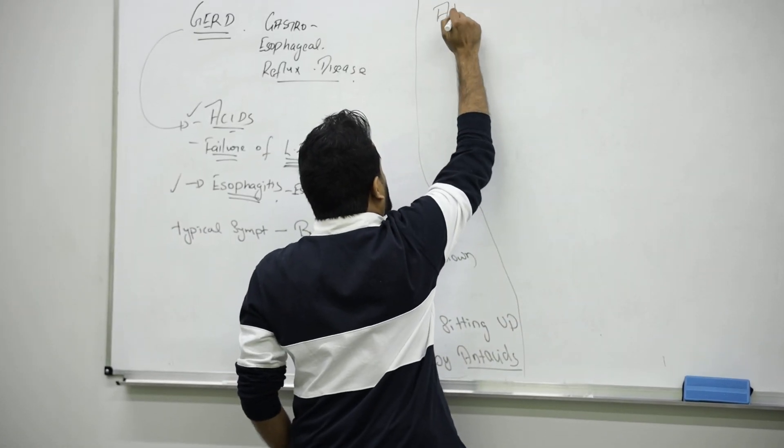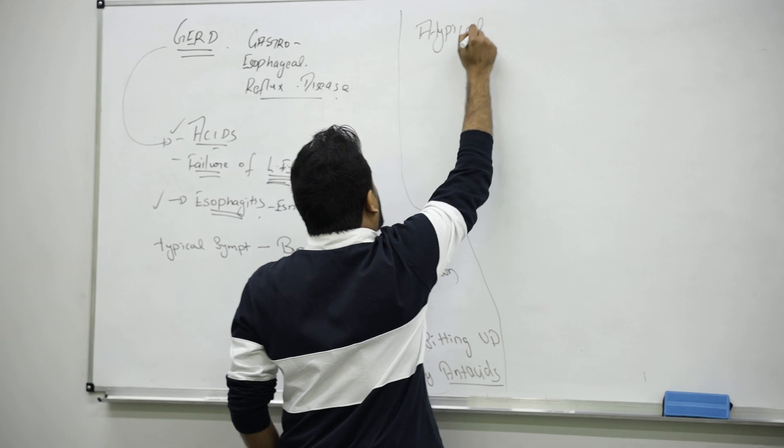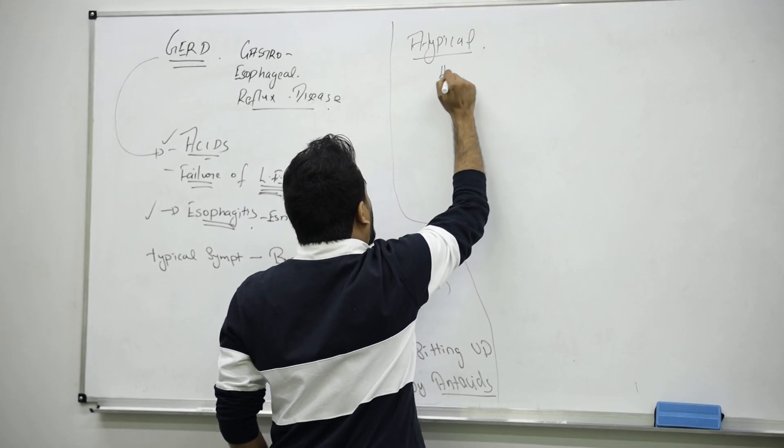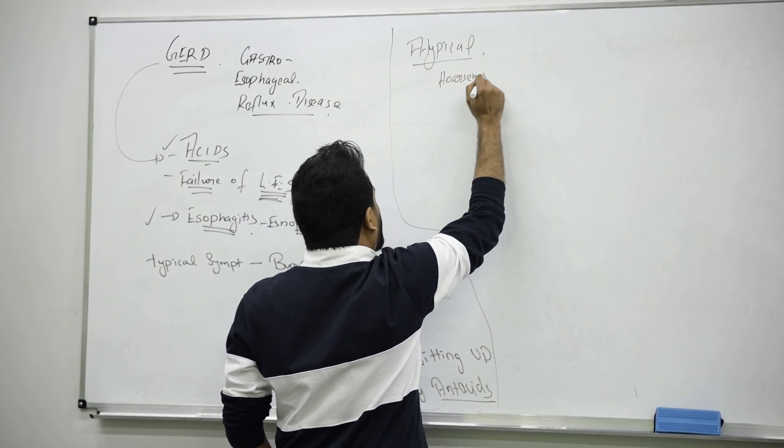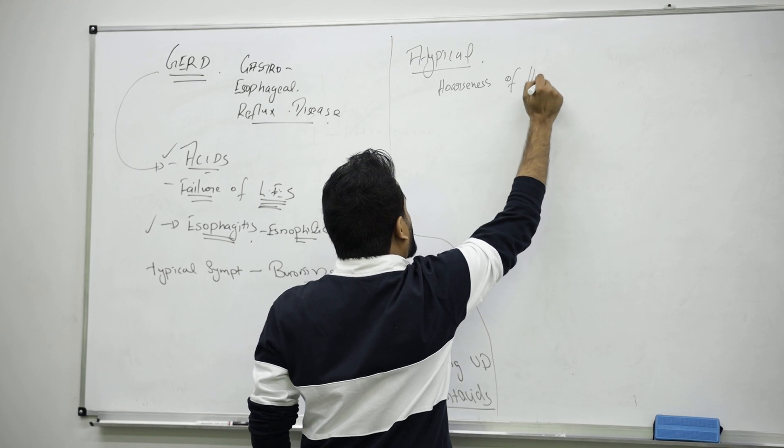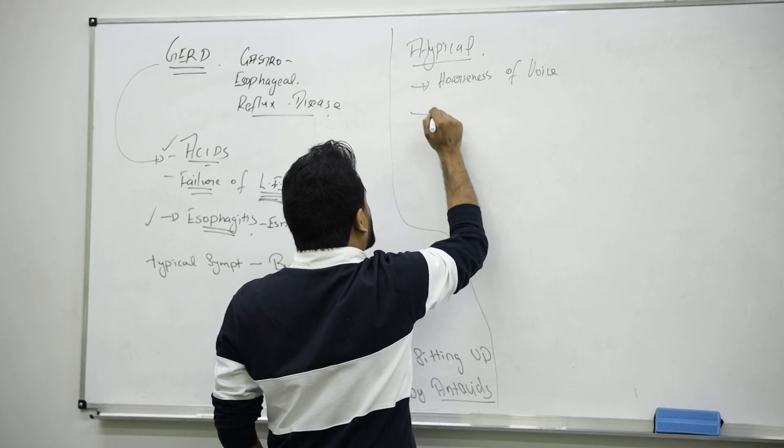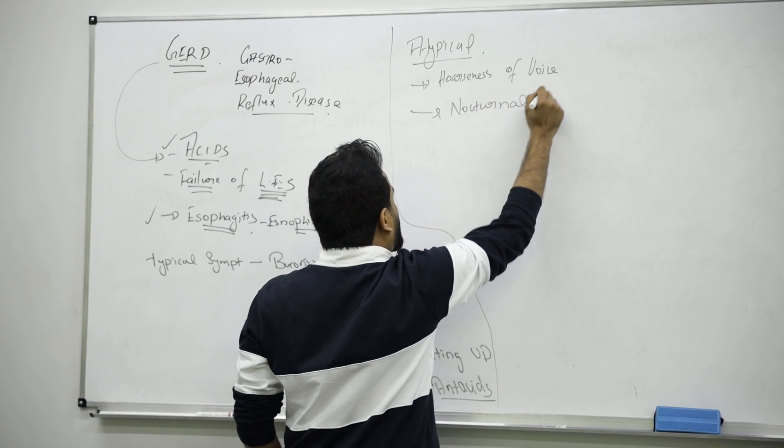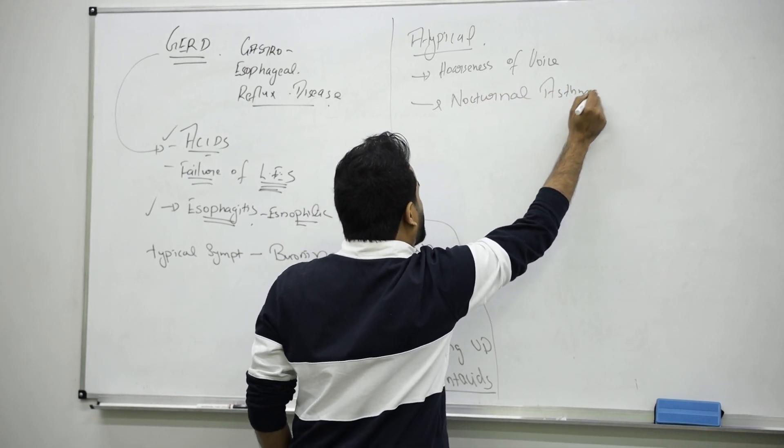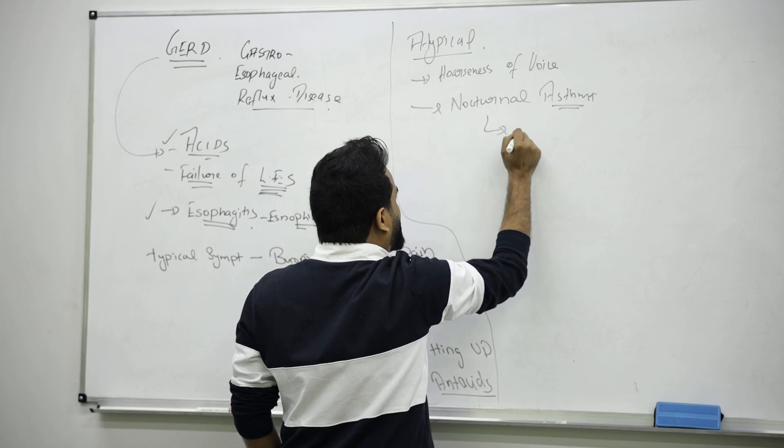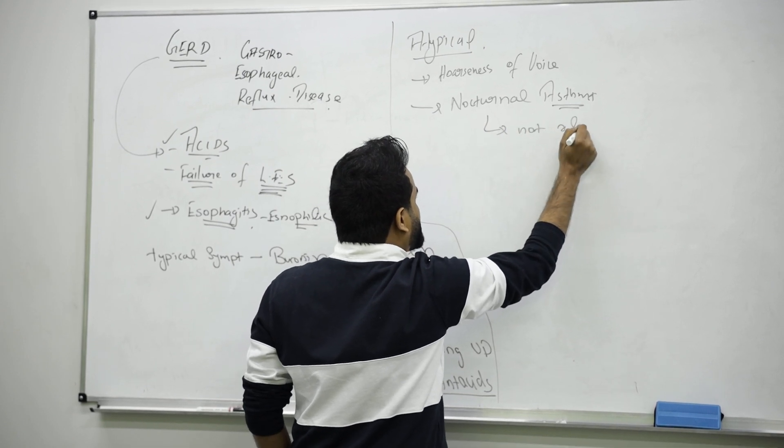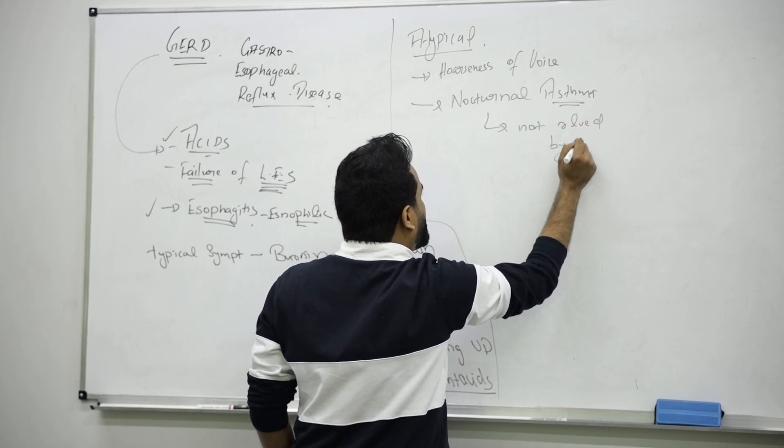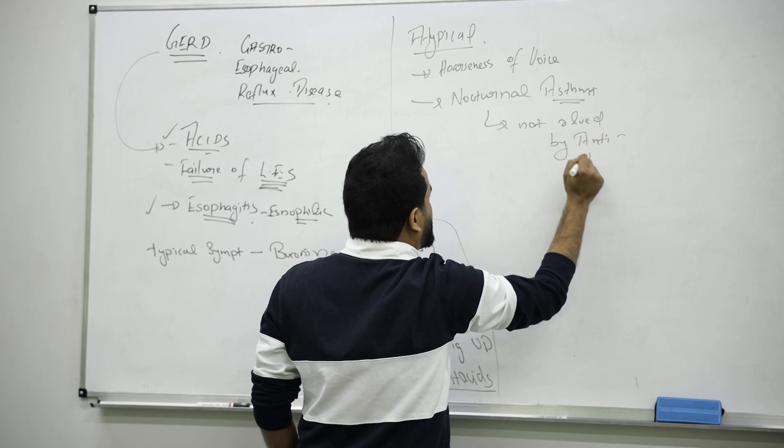Now there are some atypical symptoms - not with everyone. Some people can have hoarseness of voice, some will have nocturnal asthma. Very important: they will have wheezing, expiratory wheezing at night, and that's not relieved by anti-asthma drugs. So it is not asthma.